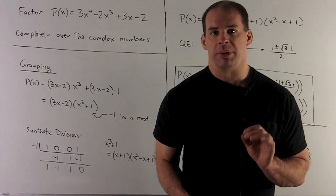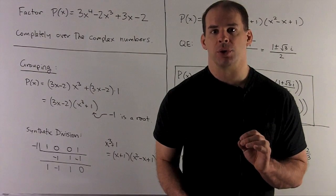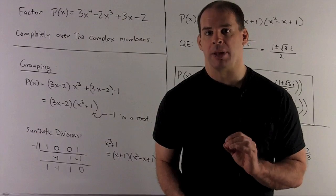Factor the polynomial P(x) = 3x^4 - 2x^3 + 3x - 2 completely over the complex numbers.